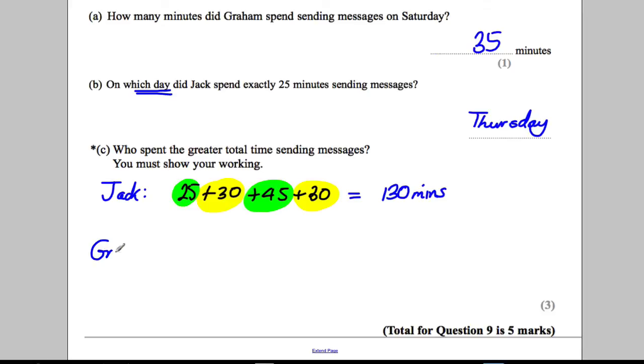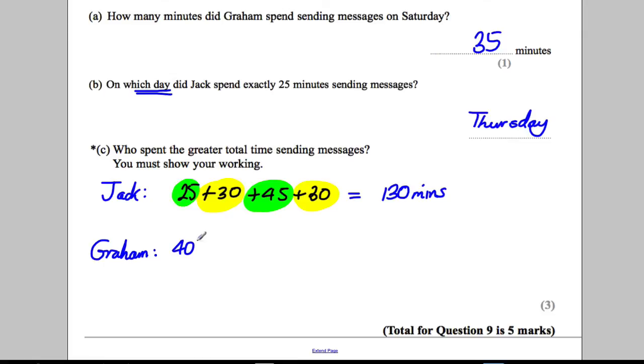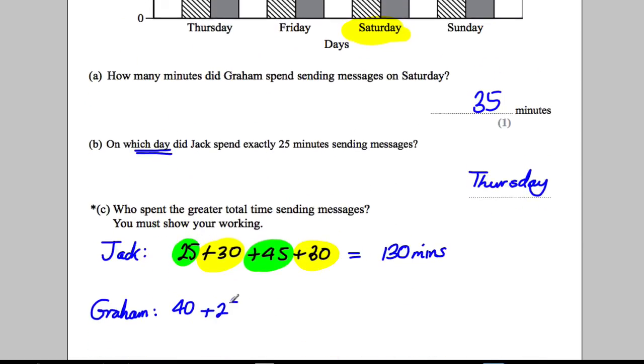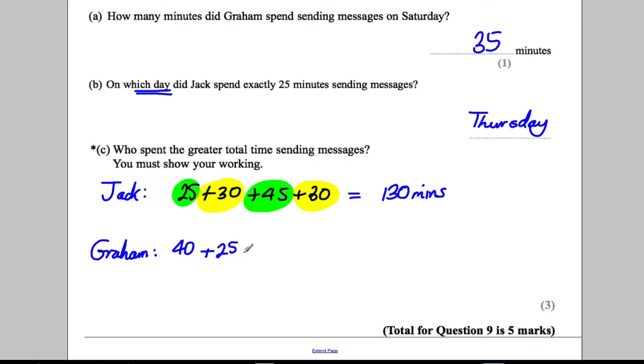Graham - we must show our working. So Graham is 40 + 25 + 35 + 40. And we have to add them now. Let's just add them up in the most sensible order. We've got 40 here and 40.